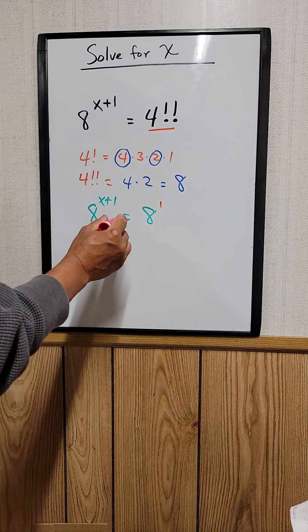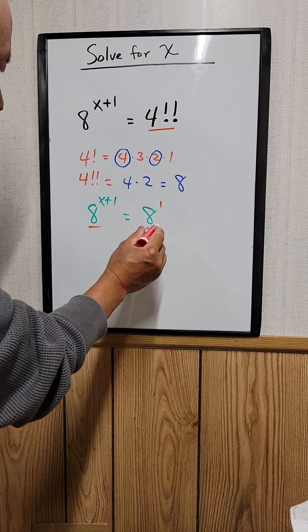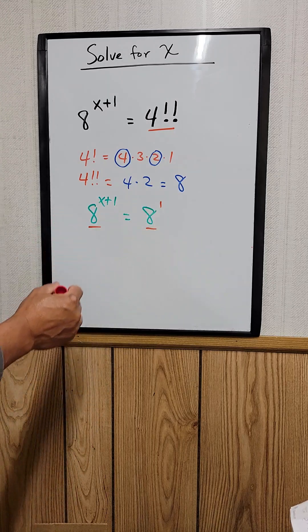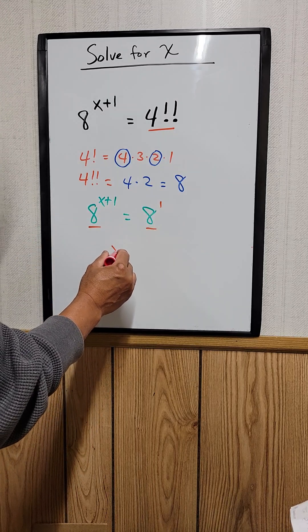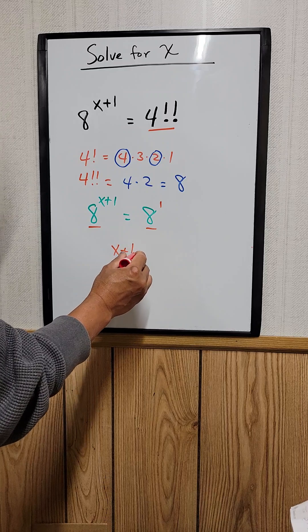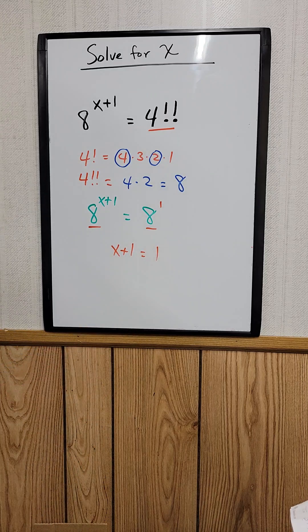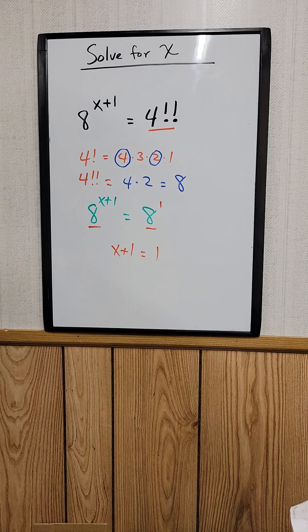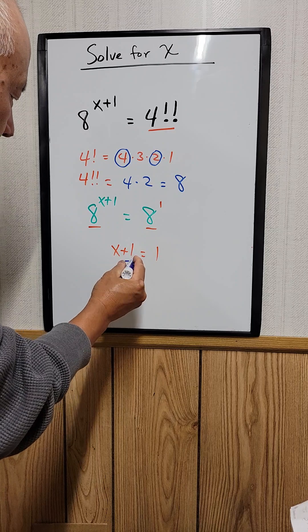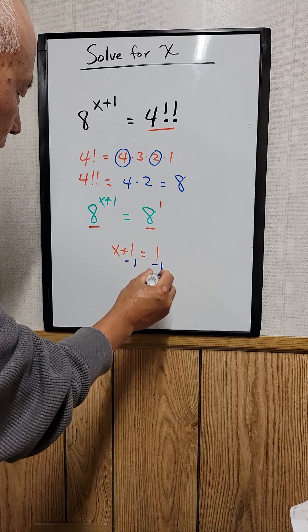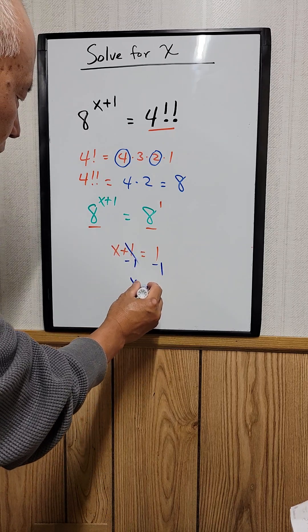Since the bases are the same, we can equate the exponents. So x plus 1 is equal to 1. Now minus 1 on both sides, this cancels out, so x is just equal to 0.